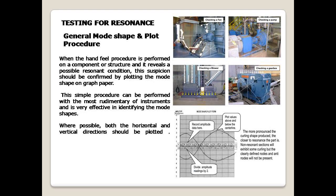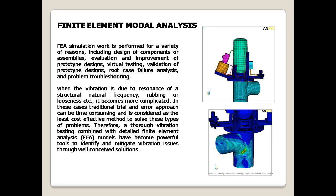General Mode Shape and Plot Procedure: when the hand-feel procedure performed on a component or structure reveals a possible resonant condition, this suspicion should be confirmed by plotting the mode shape on graph paper. This simple procedure can be performed with the most rudimentary of instruments and is very effective in identifying mode shapes. Where possible, both the horizontal and vertical directions should be plotted.